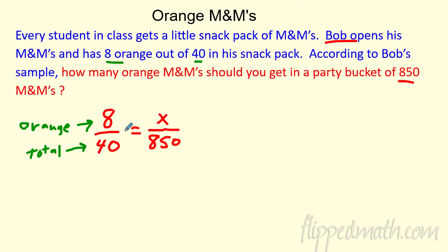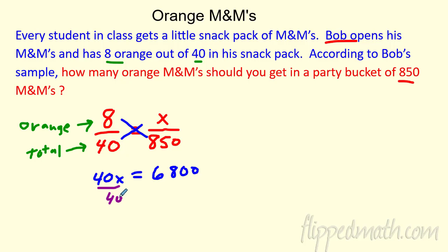Let's solve this. We're going to cross multiply. Eight times 850 is 6,800. Then 40 times x is 40x. Now this is a one-step equation. I'm just going to divide both sides by 40. This is only using Bob's ratio, but according to Bob's snack pack, if that is the true ratio of oranges, you should get 170 orange M&Ms in your party bucket.